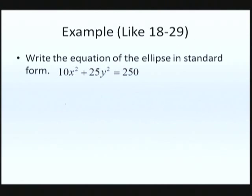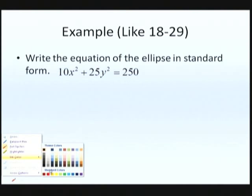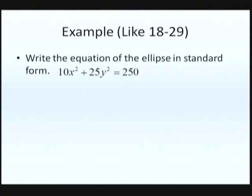It's an example like 18 through 29. It wants us to write the equation of the ellipse in standard form. Well, if we're going to do that, remember that the standard form looked like it had the variables on the left, and then on the right side it just had the number 1. So we need to divide 250 by itself to create the number 1. And so we have to divide everything by 250.